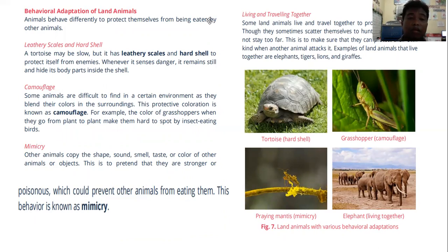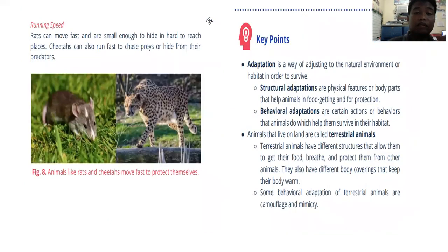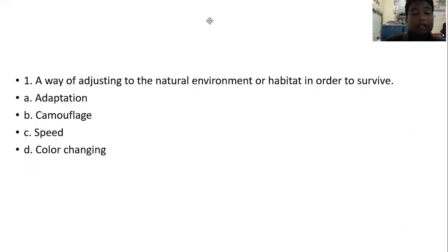For behavioral adaptations, some animals use camouflage so they cannot be captured by their predators. We also have elephants, which walk together as a group to protect one another when they travel. Also, some animals have running speed that helps them in hunting their prey and escaping from their predators.